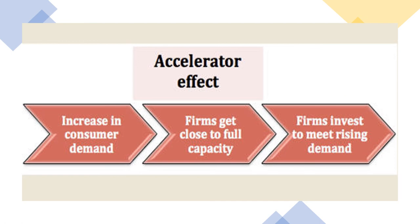The accelerator effect works as follows: an increase in consumer demand happens because people have more income and more money. When demand increases, firms get ready to produce more and more units of a particular product. In order to produce that product, investment is required. So firms invest to meet the rising demand — this is the accelerator effect.